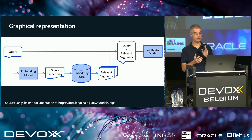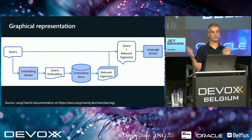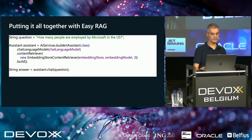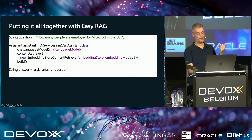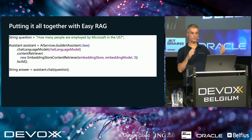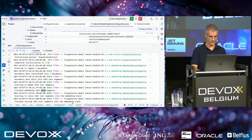Graphically: you take the query from the user, transform it into a vector with an embedding model, query the vector store asking for three related segments, put those into the prompt alongside the question, and send everything to the LLM which will answer you. In terms of code: you have a chat language model, you retrieve content using the embedding store and embedding model configured earlier, and three is the number of text segments you want. If you ask for more, it slows everything down and — most importantly — you get really bad results.